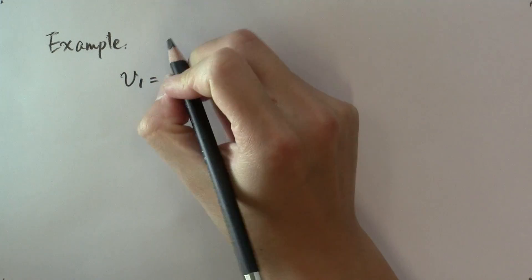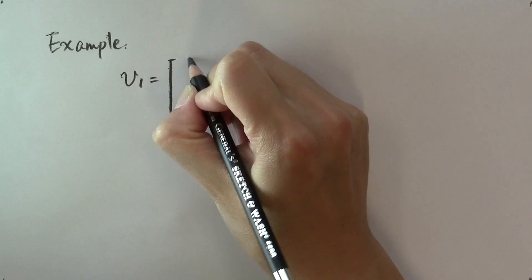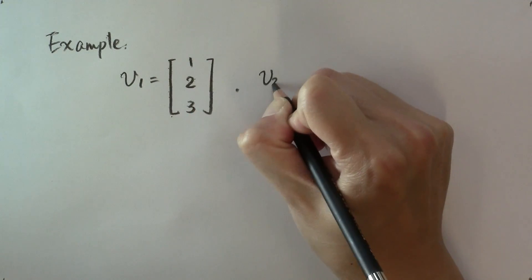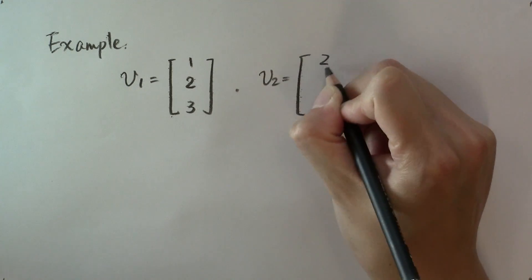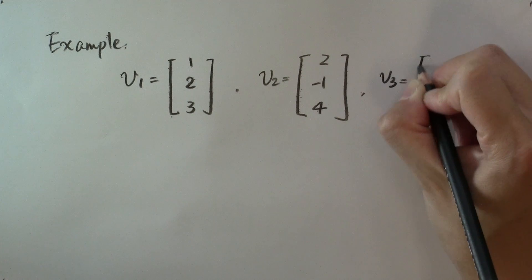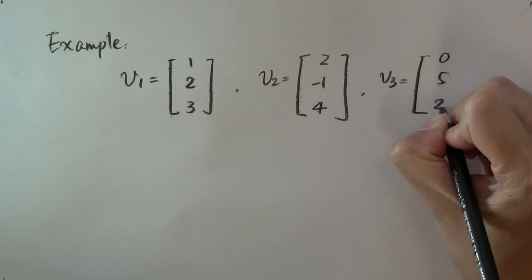Let's look at an example. Suppose I have three vectors. v1 is the vector [1, 2, 3], v2 is [2, -1, 4], and v3 is [0, 5, 2].